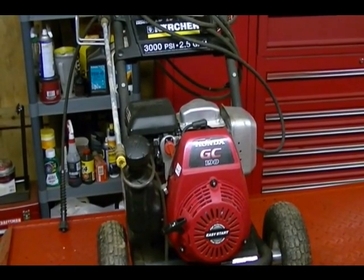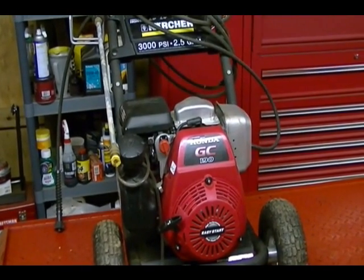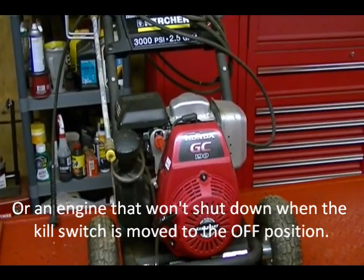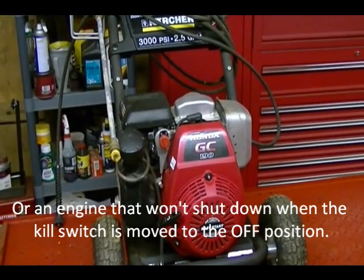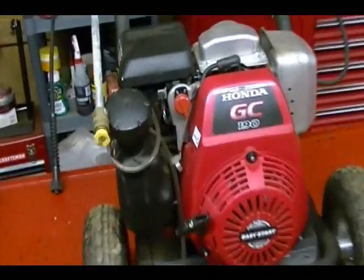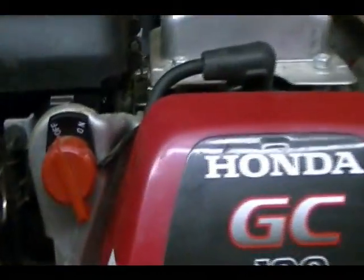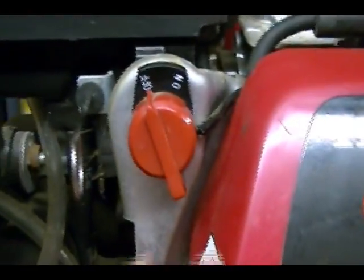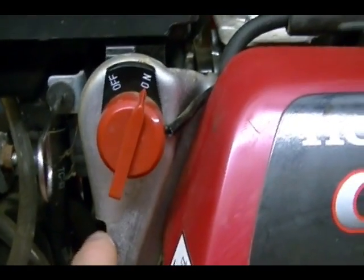If you have an engine that isn't producing any spark, you can use this method to check the kill switch to see if the source of the problem is the switch itself. On this engine the kill switch is located here on the front of the engine. You can see it has two settings, off and on.